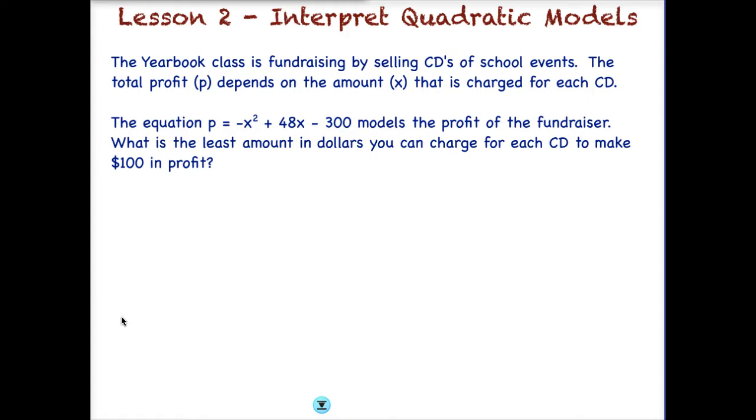What we're trying to figure out is the least amount of dollars that we can charge for each CD to make $100 in profit. So we know we want to make $100 and we want to know what's the smallest amount we can charge, because we're just going to be selling this to other students in order to make that same profit. So, the first step is to write out your equation and plug in $100 for your profit. Since $100 represents P and $100 is our profit.